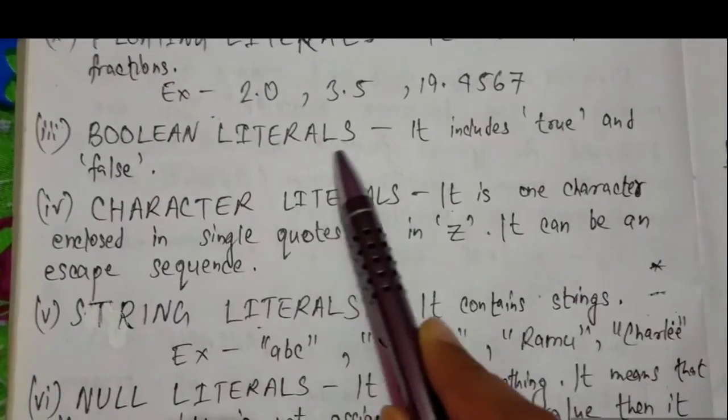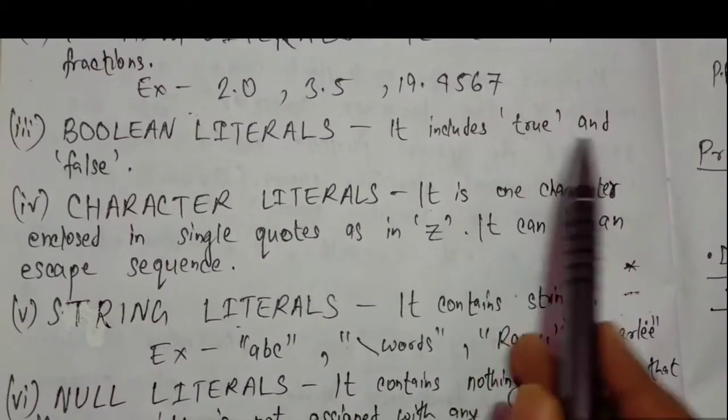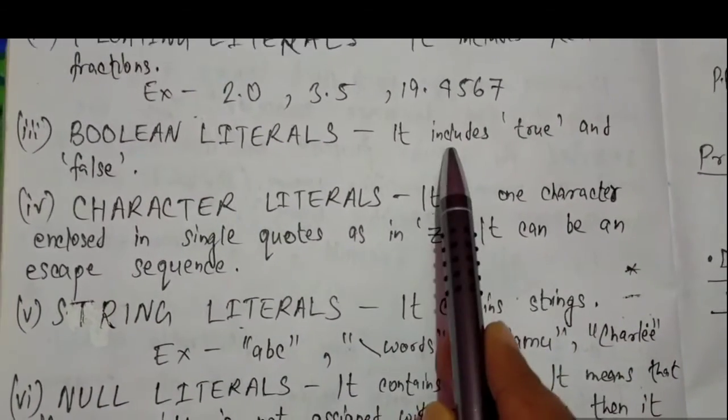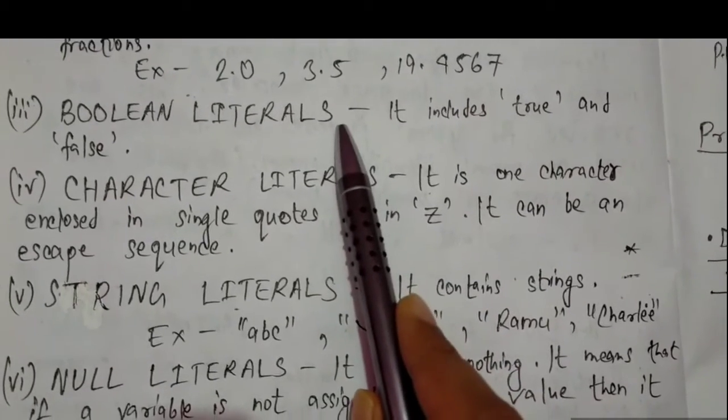Boolean literal - this literal can store only two values: true and false, nothing else. That means it is a condition checking literal.